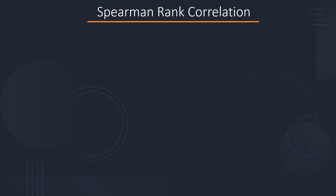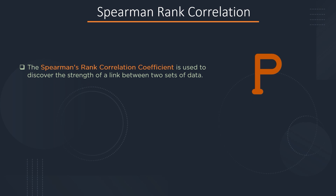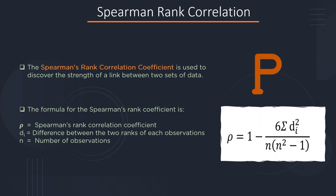The second method is Spearman's rank correlation, which is used to discover the strength of a link between two sets of data. The formula is: rho equals 1 minus 6 sigma(di squared) divided by n(n squared minus 1). Where rho is the Spearman's rank correlation coefficient, di is the difference between the two ranks of each observation, and n is the number of observations.